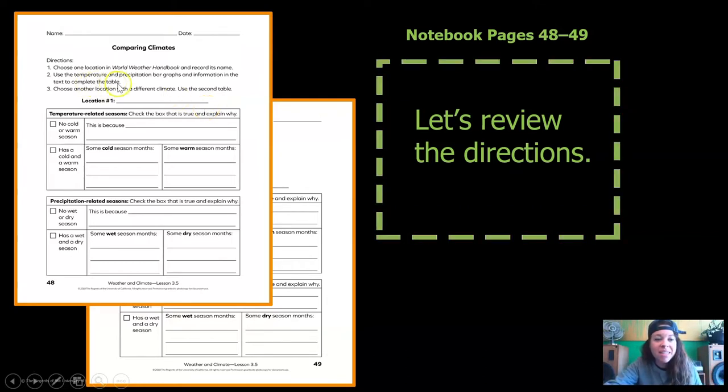Number two, use the temperature and precipitation bar graphs and information in the text to complete the table. So these are the tables. There's a temperature table, and there's a precipitation table, and I'll help you figure out how to fill it out. Number three, choose another location with a different climate and use the second table. And the second table is on page 49. So go ahead and grab those and then meet me back here when you're ready. All right? Great.